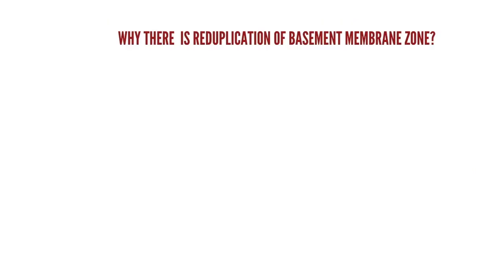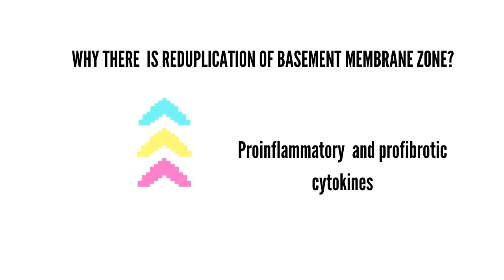There is also reduplication of the basement membrane in Kindler syndrome. Kindlin-1-deficient cells respond to cell stress by upregulating pro-inflammatory and pro-fibrotic cytokines. These cytokines initiate an inflammatory response in the dermis, resulting in the activation of fibroblasts which differentiate into myofibroblasts. Myofibroblasts secrete and deposit increased amounts of extracellular matrix protein. Repeated cycles of epidermal cell stress, cytokine secretion, dermal inflammation, and pro-fibrotic processes underlie the pathogenesis of basement membrane reduplication and mucocutaneous fibrosis.